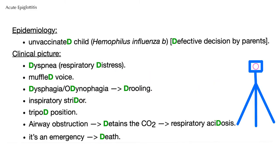This is the D mnemonic. Epidemiology: unvaccinated child — a defective decision by the parents. I'm trying to be respectful; I'm trying not to say D-U-M-B. Let's keep it clean. Please vaccinate your kids. Please.